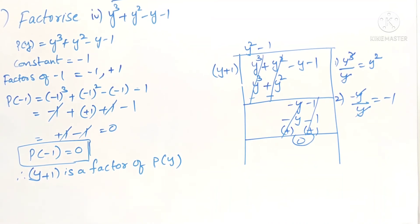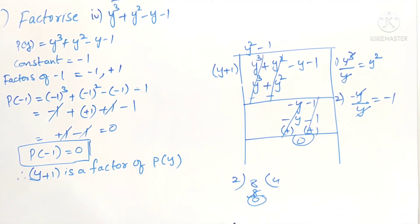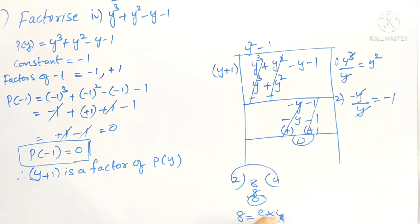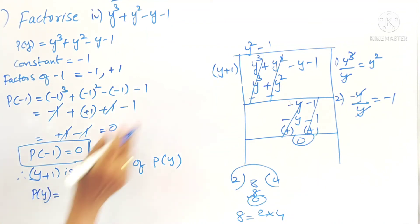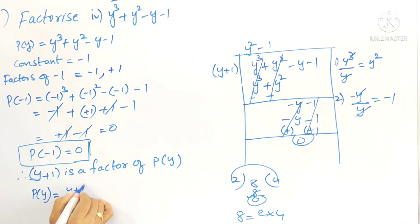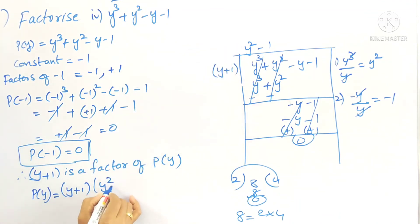Based on the division algorithm — just as 8 divided by 2 gives 4 with remainder 0, so we can write 8 as 2 × 4 — here also we can write p(y) as (y + 1)(y² - 1).